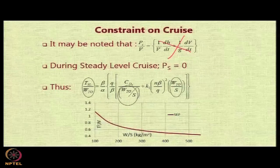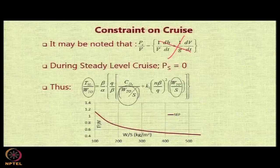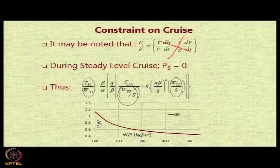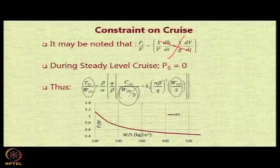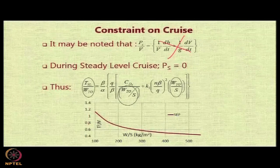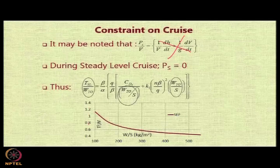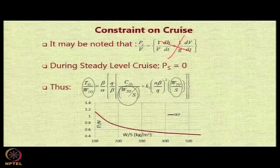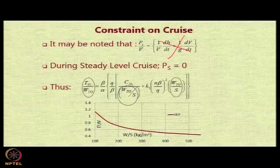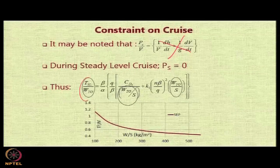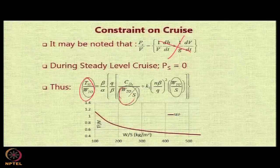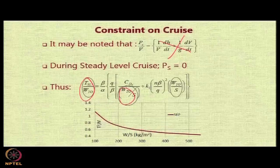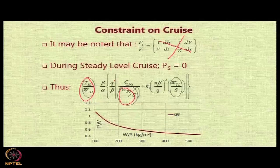If you now plot, you can see it is a quadratic relationship. You can see that on the y-axis you have T by W, on the x-axis you have W by S for one particular condition, and the line that you see represents the relationship between T by W and W by S for some particular values of β, q, α, n, etc.